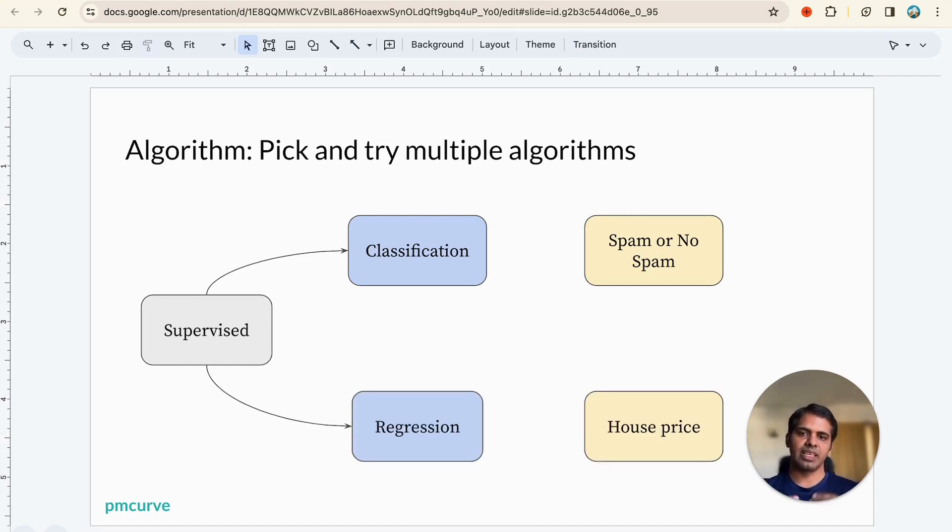The second is regression supervised models. The output you are trying to get out of classification was a particular bucket or category. In regression, it's more of a continuous number, for example, housing prices. If you want to predict what could be the price of houses in a particular location in next 10 years, you can use past data as training data. But the output is not a bucket, it's more of a number like $1 million, $2 million, half a million dollars.